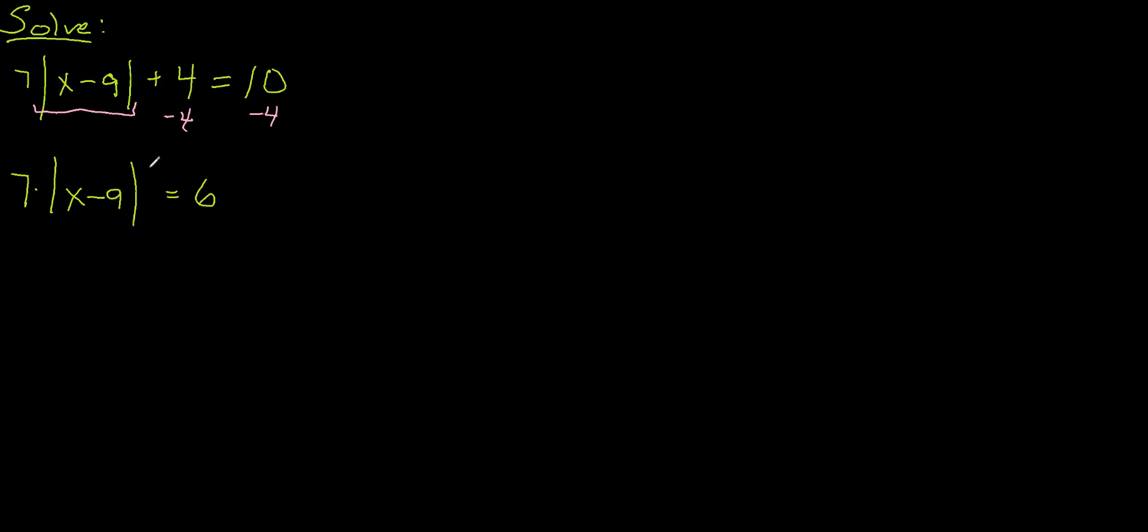And now the next layer attached to the absolute value sign, or the thing I need to move over at this point, is the 7. And that's attached by multiplication. So if I want to undo multiplication, the operation would be division. So let's divide by 7 on both sides.